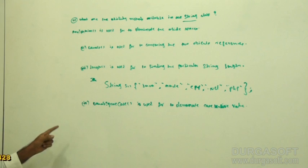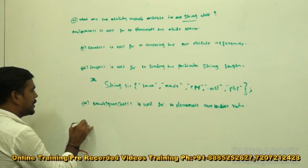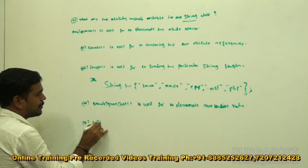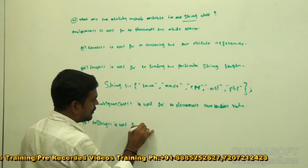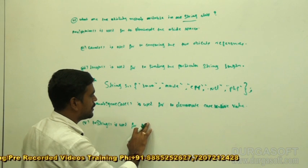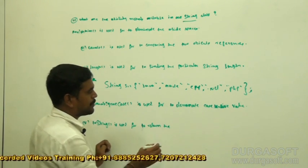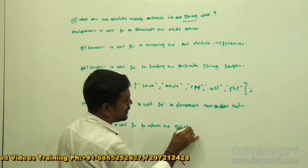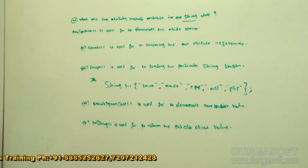Like this, different methods are available in our string class. These methods we call utility methods in string class. Next, the toString method. ToString method is used to return the subclass object value. These are all utility methods in the string class object.